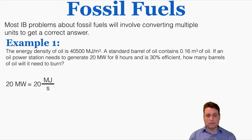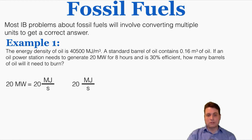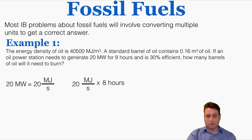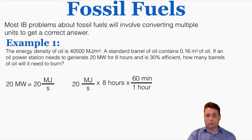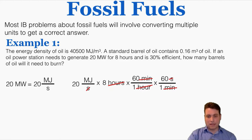Starting with 20 megawatts — equal to 20 megajoules per second — I want to know how much energy was used over the full eight hours. Multiplying power by time gives total energy. The time is eight hours, but since the first value uses seconds, I need to convert hours to seconds using the factor label method: multiply by 60 minutes per hour, then by 60 seconds per minute, canceling out hours and minutes. This gives 576,000 megajoules of energy out of the power plant.